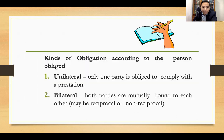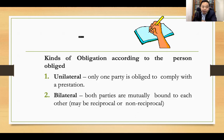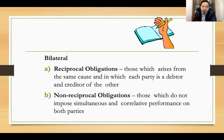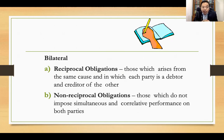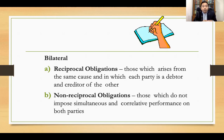If the obligation is reciprocal, as contrary to a unilateral obligation, then the power to rescind — the power to cancel the obligation — is given to both parties, and this is made available in case one of the obligors should not comply with what is incumbent upon him. There are two kinds of obligation according to the person obliged: unilateral and bilateral. When you say unilateral, only one party is obliged to comply with the prestation. When you say bilateral, both parties are mutually bound to each other. There are two kinds of bilateral obligation: reciprocal and non-reciprocal. Reciprocal bilateral obligation arises from the same cause and in which each party is a debtor and creditor of the other, while non-reciprocal obligations do not impose simultaneous and correlative performance on both parties.